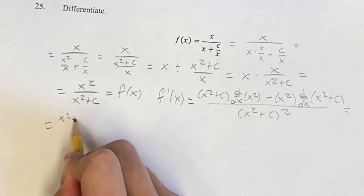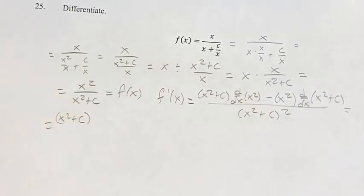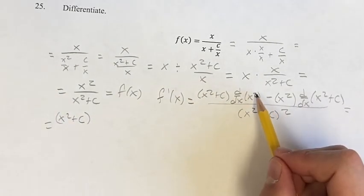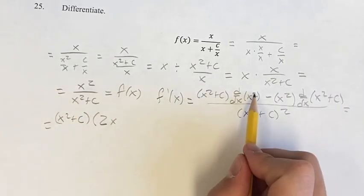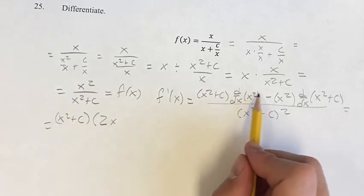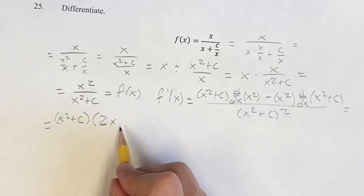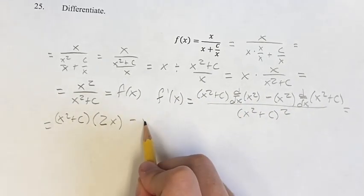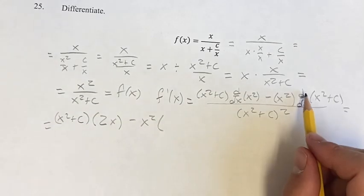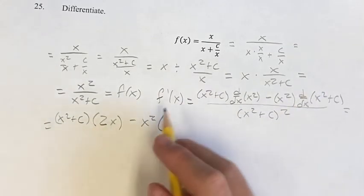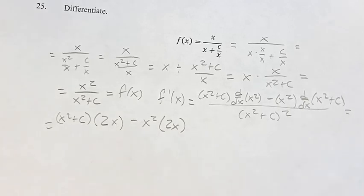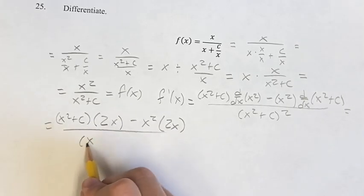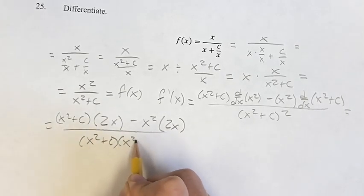Simplifying this now, we get x squared plus c times the derivative of x squared, which we find by, since it's a power function, bringing down the exponent, with a new exponent is the old one minus 1. So 2 minus 1 is 1. It's x to the first power, which is just x. Minus x squared times the derivative of x squared, we just found, was 2x plus the derivative of c. c is just some constant, so its derivative is 0. So this is 2x. Over x squared plus c times x squared plus c.